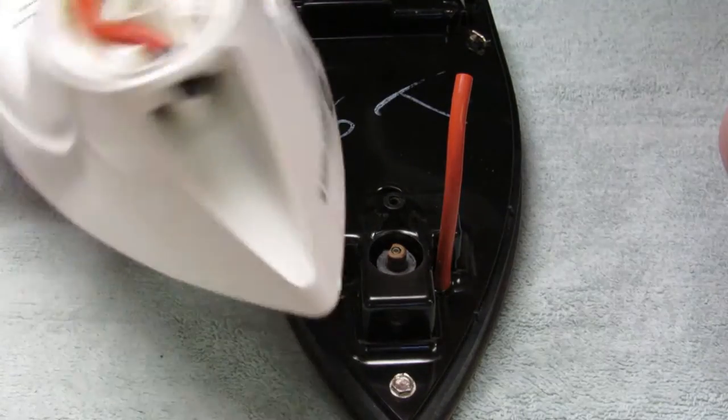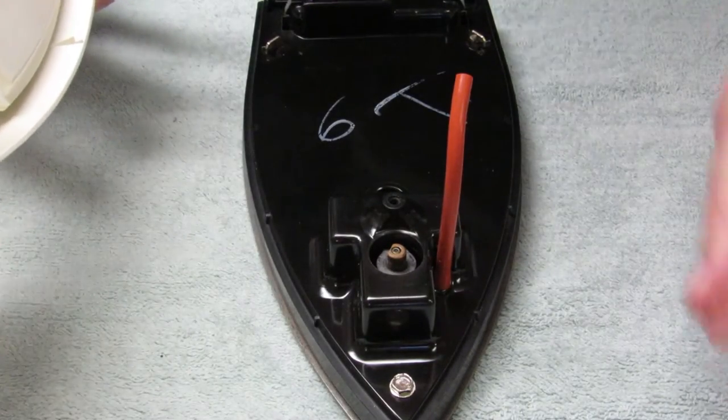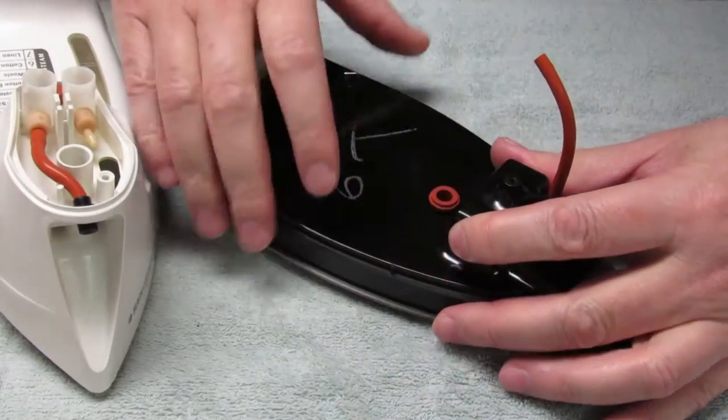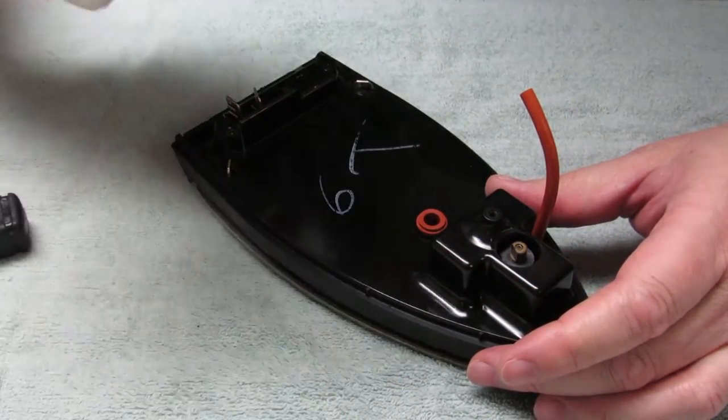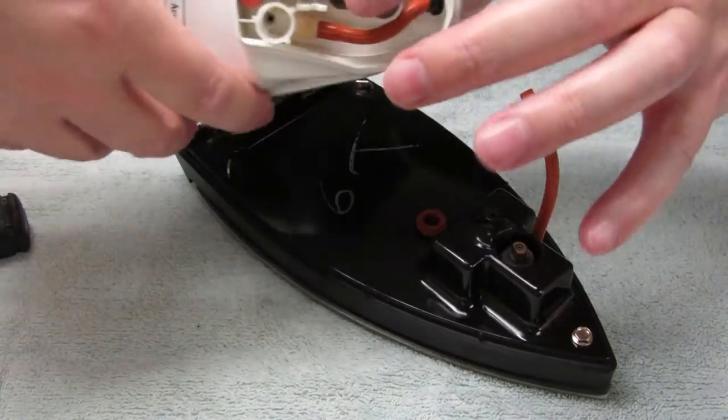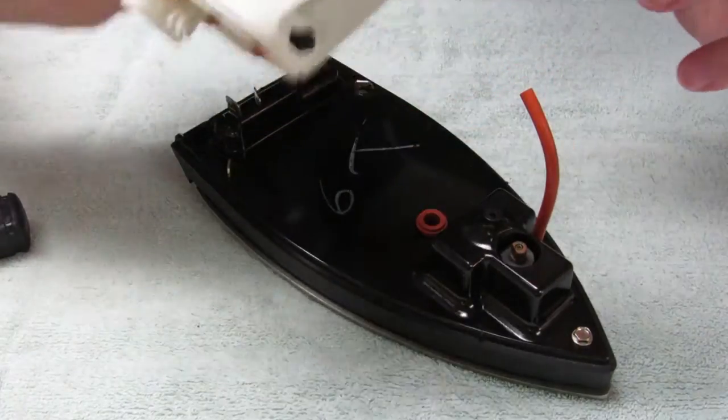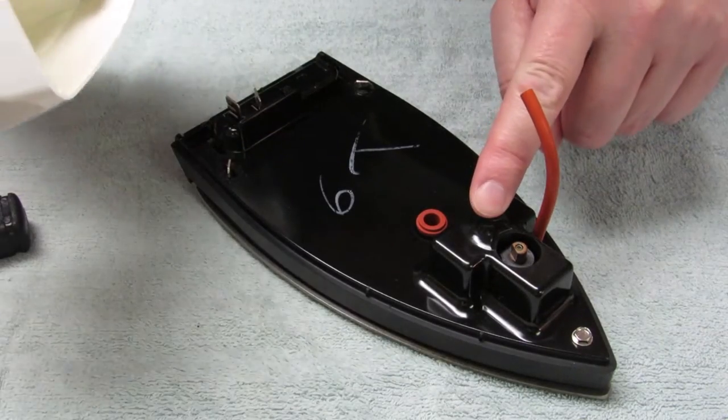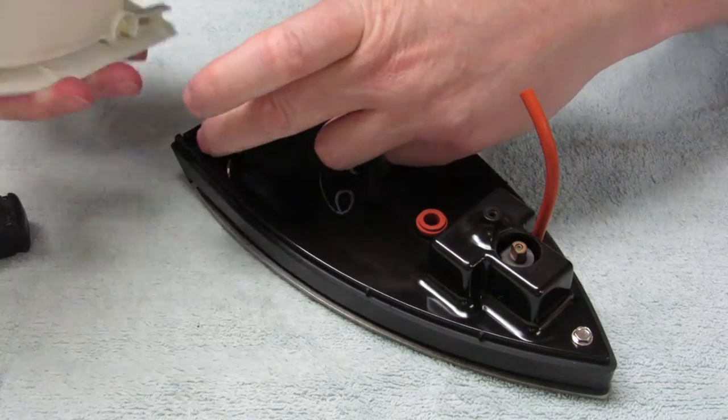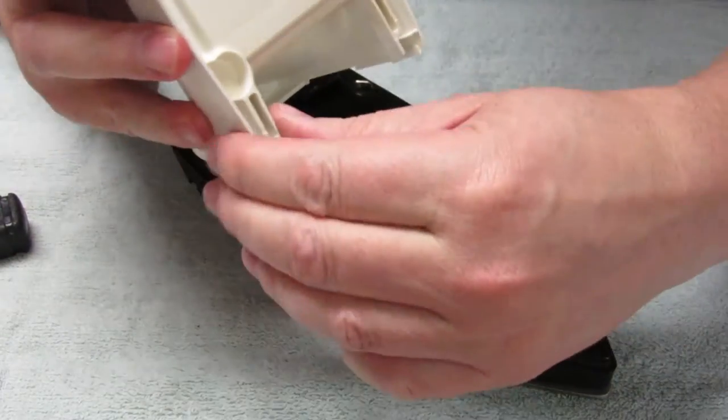Next we need to get the stop part on, and we need to remember to install this bottom seal here. Make sure the screw's in there in the middle, but it seems to not want to fall out, so that's good.